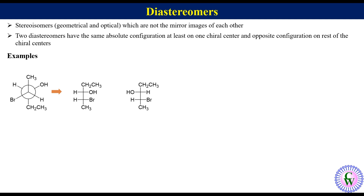We can also find this relation by comparing absolute configurations — at C2 they have the same configuration, while at C3 they have different configurations, so they are diastereomers. Please subscribe to the channel and press the bell icon if you like this video. Thank you very much for watching.